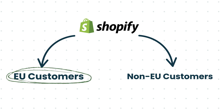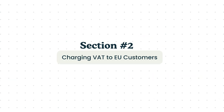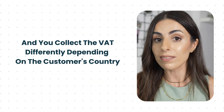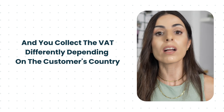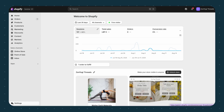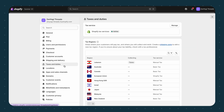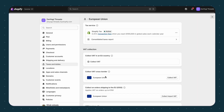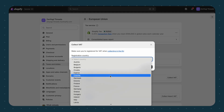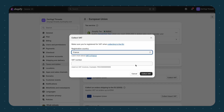Let's start talking about European customers. If your business is located in a European country and you are selling to other European countries, you must collect VAT. The VAT percentage differs from one country to another. Shopify can handle all of this if you do the setup the right way. In your Shopify dashboard, go to Settings and then go to Taxes and Duties. Add your country and your VAT registration number. Then add the European Union as a region and enter your OSS number.